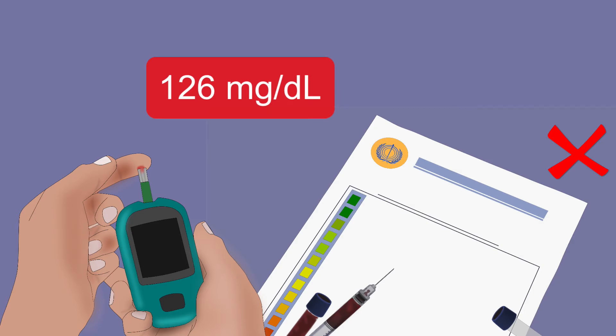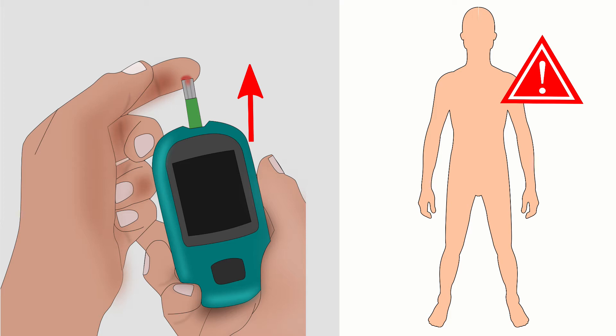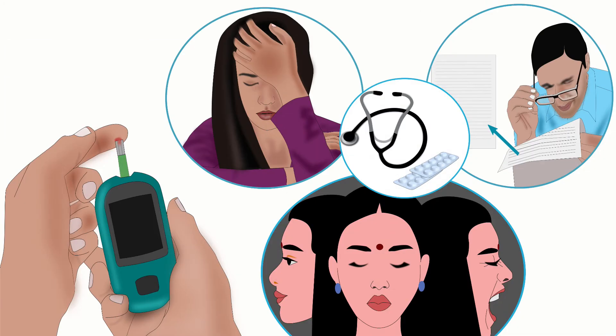Fasting blood glucose levels are checked on two separate blood tests. A level of 126 mg per deciliter or higher is diagnosed as diabetes. However, a higher blood glucose level is just a symptom of a disease. It is not the disease itself. It is an effect of something going wrong in the body, and it is not the root cause of diabetes. It does not provide a better understanding of the disease and its treatment.